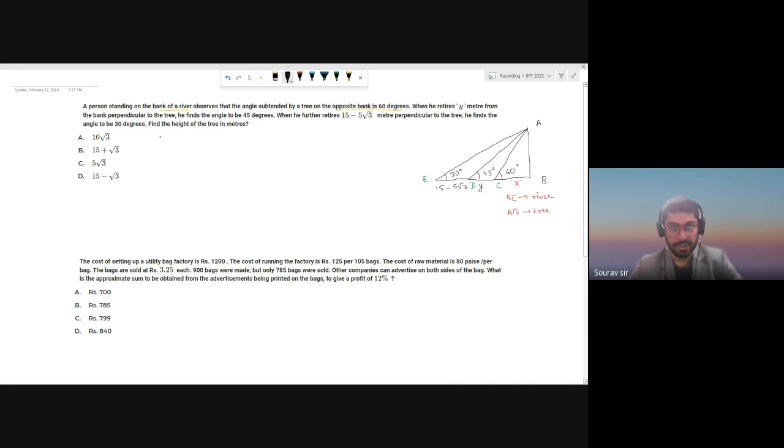In triangle ABC, tan 60 degrees would be perpendicular by base, so AB by BC. BC is X and tan 60 is root 3, right? So that means AB will be root 3 X. So that is the height of the tree.